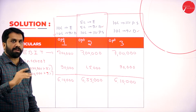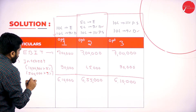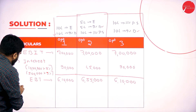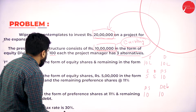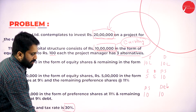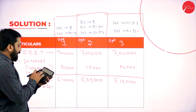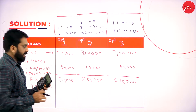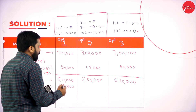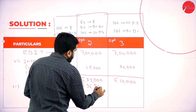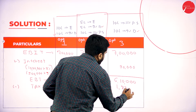Up to this we have completed EBT. Now minus taxation. Taxation at what percentage? It is given: 30% is taxation. For Option 1: 6 lakh 10,000 into 30% — I got 1 lakh 83,000. For Option 2: 6 lakh 55,000 into 30% — I got 1 lakh 96,500. For Option 3: 6 lakh 10,000 into 30% — already calculated — 1 lakh 83,000.